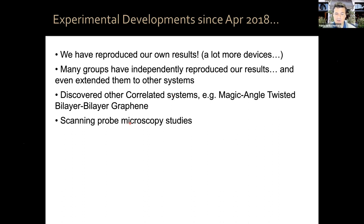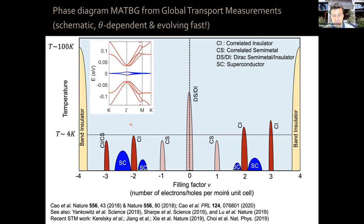People have started to look microscopically using various techniques — starting with STM, then scanning nanoSQUIDs, scanning ACT, scanning near-field optical microscopy — looking in detail at the microscopic structure of these moiré heterostructures. There's something about these scanning techniques that helped us understand the phase diagram. Initially, information about magic angle graphene came from global electronic transport measurements from our group and others.